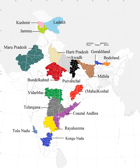Saurashtra is linguistically different from the rest of the state, with its own Saurashtra dialect. Alternatively, a joint state for both Kutch and Saurashtra is also advocated.